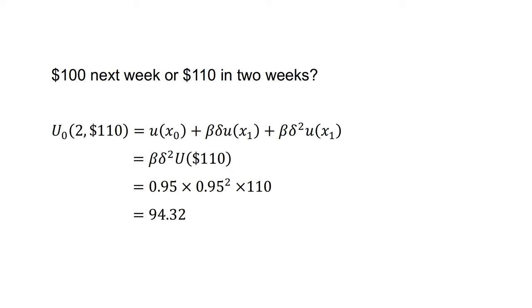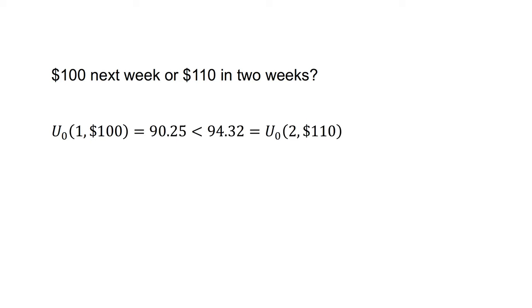The discounted utility of the $110 in two weeks, u(0, 2, 110), equals beta times delta squared times utility of 110, which equals 0.95 times 0.95 squared times 110, which equals 94.3. As u(0, 1, 100) equals 90.25, which is less than u(0, 2, 110) equals 94.3, the present biased agent will prefer to receive $110 in two weeks.